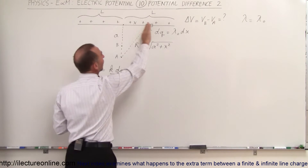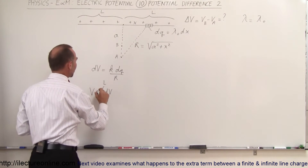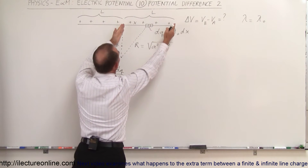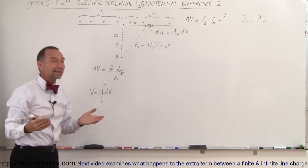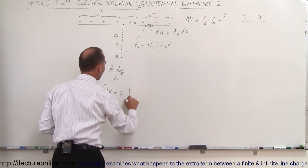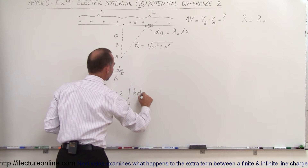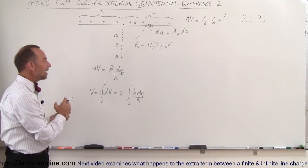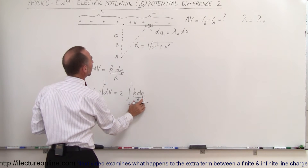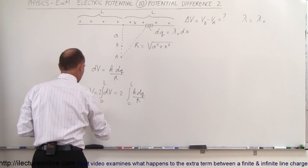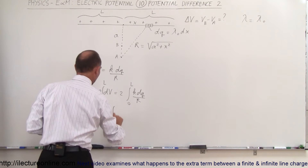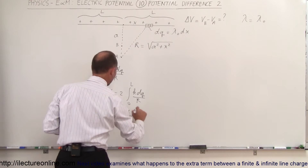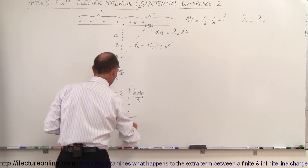That integral only covers one side of the line charge. To include the other side, we simply double it — direction doesn't matter for potential, only the distance. So V equals 2 times the integral from 0 to L of K dq over R. Substituting dq = lambda sub-naught dx and R = sqrt(A² + x²), and factoring out the constants K and lambda sub-naught, we integrate dx over sqrt(A² + x²).